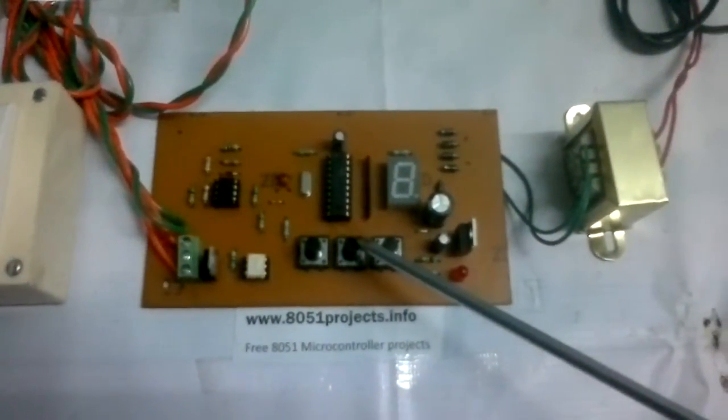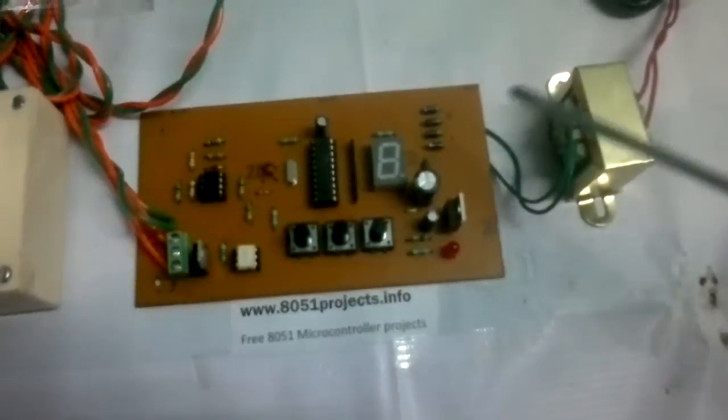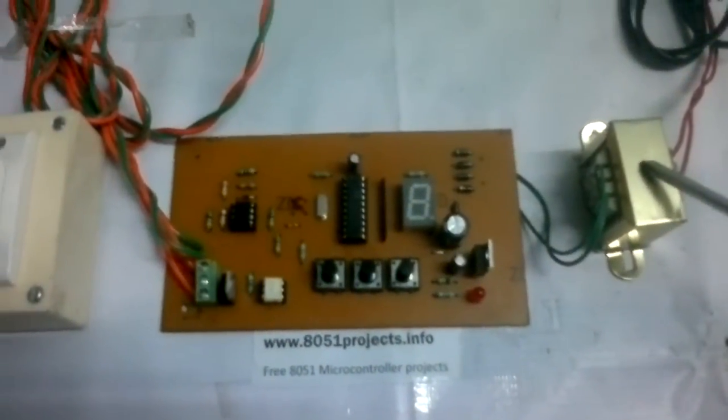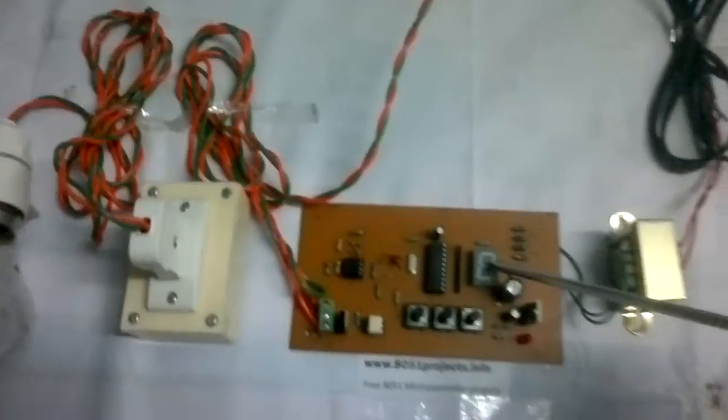This is used to increase the speed and this is used to decrease the speed. And this is the supplying transformer. This LED display shows the speed control, that is the speed in which the fan rotates.